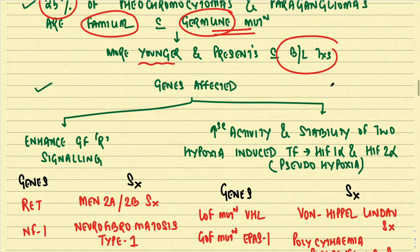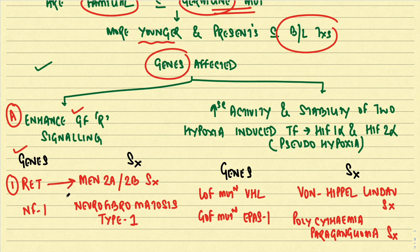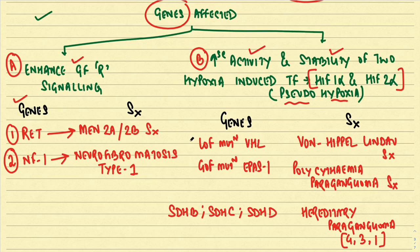Germline mutations involve two important categories of genes. Category A genes enhance growth factor receptor signaling and include: the RET gene, associated with MEN 2A or MEN 2B syndrome, and the neurofibromatosis 1 (NF1) gene, associated with neurofibromatosis type 1 syndrome. Category B genes increase the activity and stability of hypoxia-inducible transcription factors HIF-1α and HIF-2α, inducing a condition called pseudo-hypoxia.